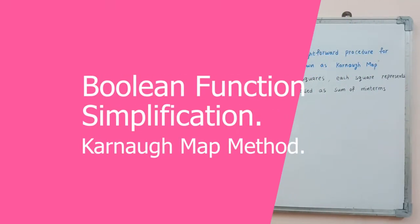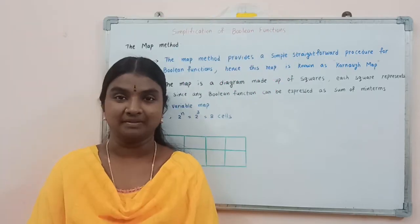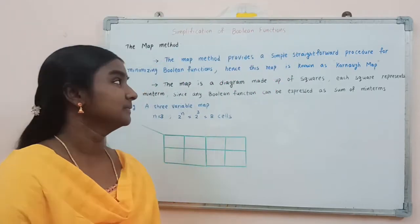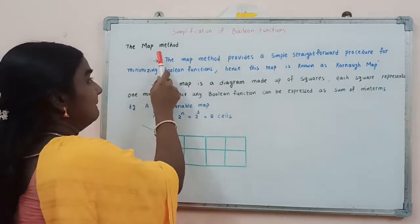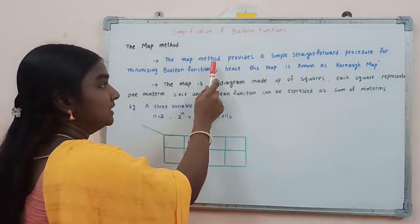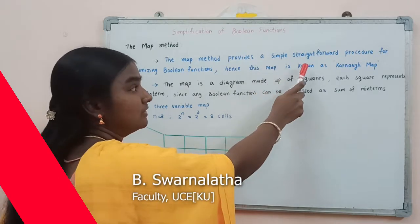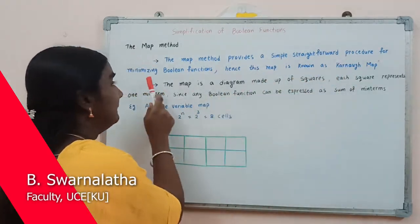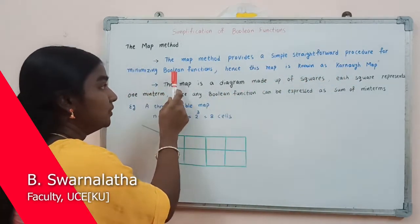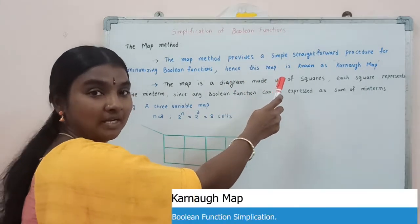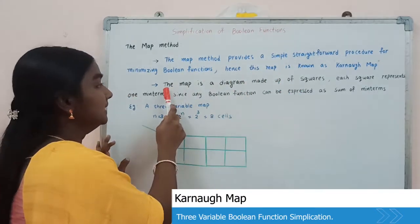Hello everyone. In this video lecture, we are going to learn about the Karnaugh map simplification method. The map method provides a simple, straightforward procedure for minimizing boolean functions. Hence, this map is known as the Karnaugh map.